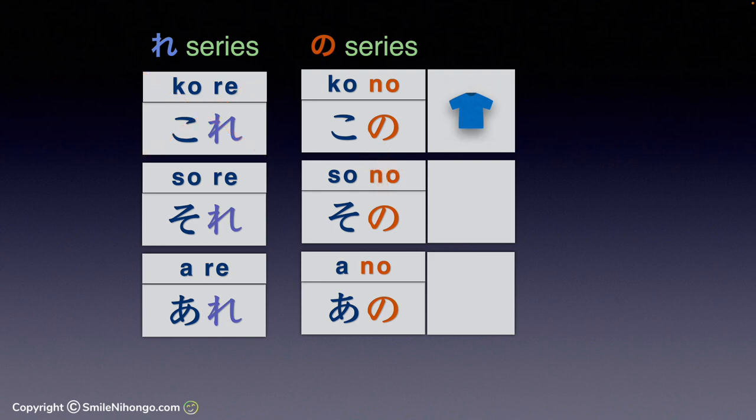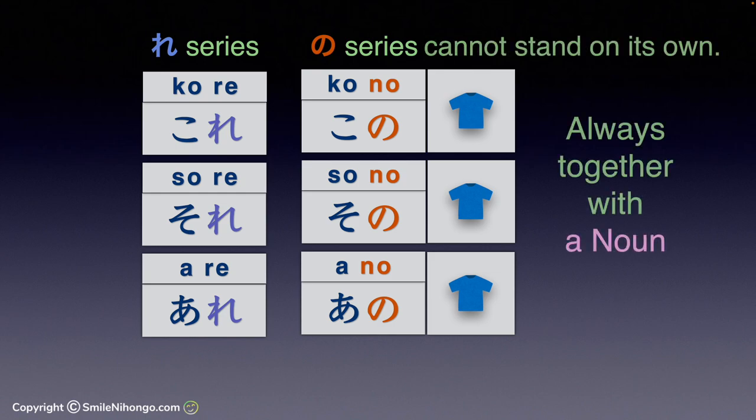That's the only difference between these two groups. これ、それ、あれ can function as a unit in a sentence by themselves, but この、その、あの have to be paired with a noun.